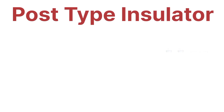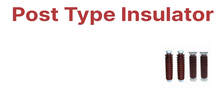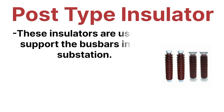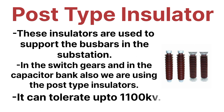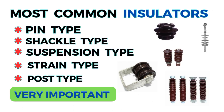The last type is the post type insulator. Post type insulators are generally used to support bus bars in transformer substation yards. They are also used in switchgear to support breakers, and in capacitor banks in industries. As you can see in the image, the post type insulator can tolerate up to 1100 kV. That covers all the types of insulators used in industries and transmission lines. Thanks for watching!